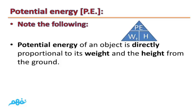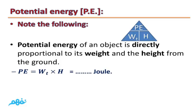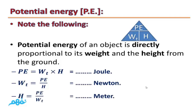Potential energy of an object is directly proportional to its weight and the height from the ground. This means that by increasing the weight or height, the potential energy also increases, or vice versa. Potential energy equals weight times height, and its measuring unit is joule. Weight equals potential energy divided by height, and its measuring unit is newton. Height equals potential energy over weight, and its measuring unit is meter.